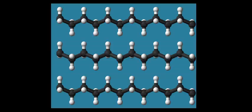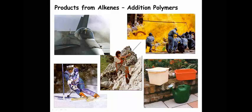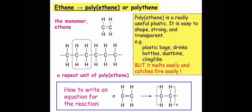There are huge numbers of addition polymers; we will focus on three. Ethene is used to produce polyethene, or polythene. Polythene is a really useful plastic — it is easy to shape, strong, and transparent. It has many uses including plastic bags, drinks bottles, dustbins, cling film, bowls, and buckets. However, it melts easily and also catches fire.